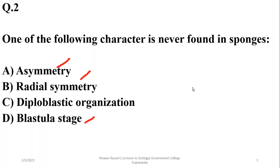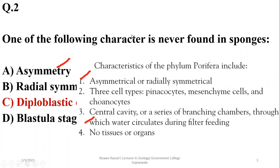That's why they are included in the animals, but they are never included in diploblastic organisms because cells are not organized into proper layers in case of sponges. They may be asymmetrical or radially symmetrical, but diploblastic organization is not their feature.